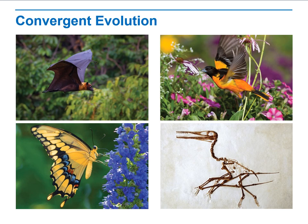Unrelated organisms in similar environments may evolve adaptations to similar niches. The production of similar characteristics in unrelated organisms is known as convergent evolution. In addition, mammals that feed on ants and termites evolved five times in different regions.